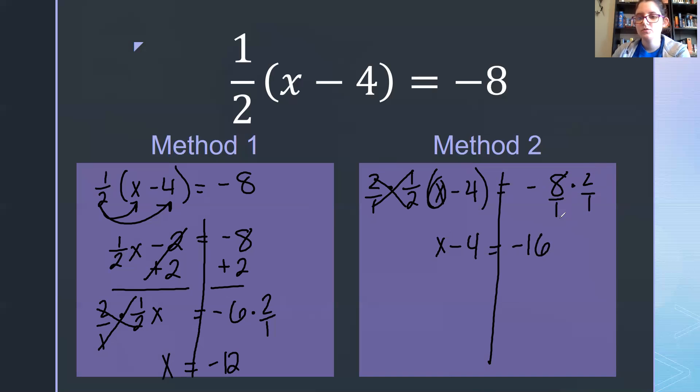So we have x minus 4 equals negative 8 times 2 is negative 16. We could keep our denominators of 1, but anything over 1 is just that number. So we're going to leave it as is. I'm going to undo my subtraction with addition. These cancel.